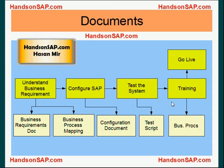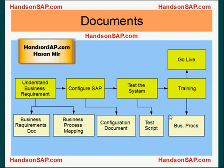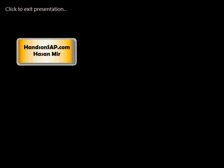To summarize: from Stage 1, two documents are produced — the Business Requirements Document and the Business Process Mapping document. From the configuration stage, the Configuration Document comes out. From testing, you create a Test Script. From the training stage, you create Business Procedure Documents. This is a basic skeleton for any implementation methodology; some methodologies may have far more documents, but every one will include these basics. This gives new learners an idea of what an SAP implementation project looks like.